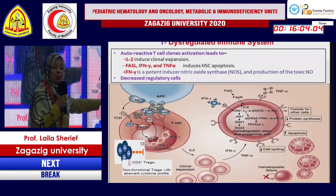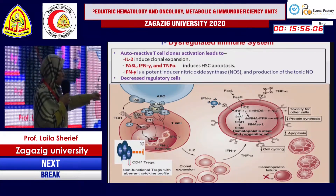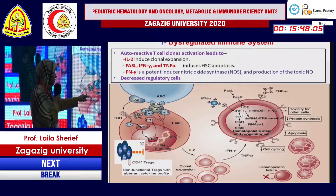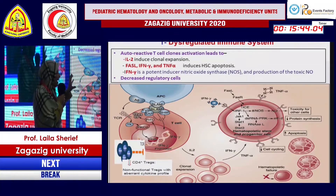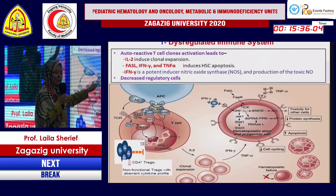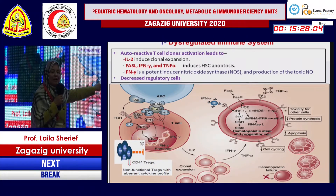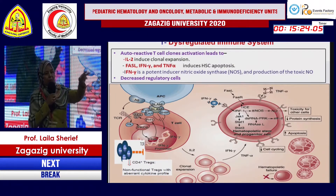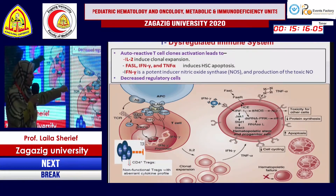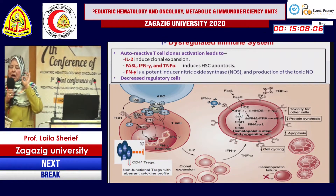T-bet is a transcriptional factor very important for the regulation of T-cell function. It combines with the gamma interferon promoter, leading to increased production of interleukin-2, which causes clonal expansion and extensive production of gamma interferon and tumor necrosis factor. These factors bind directly to hematopoietic stem cells, leading to multiple intracellular pathway abnormalities, decreased cell cycle activity, increased apoptosis, and increased nitric oxide production which is toxic to the cells.